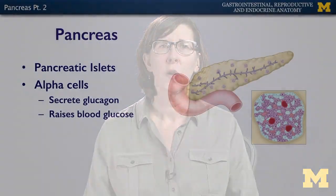The endocrine part of the pancreas is the pancreatic islets. As mentioned in the previous section, there are four different cell types.